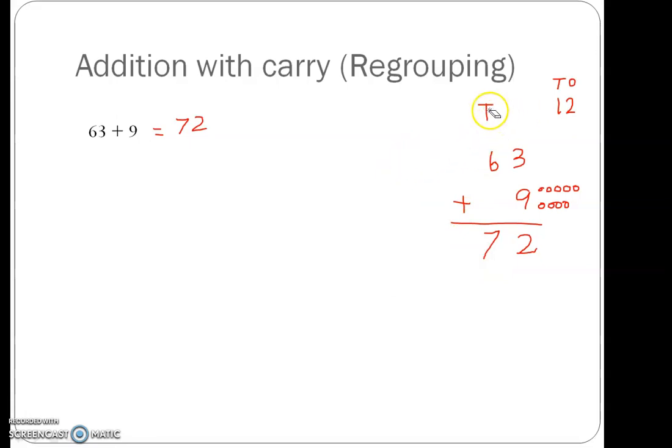Now let us look at another example. 27 plus 6. So first we arrange them in place value chart. 10s and 1s. 27 is 2 tens and 7 ones. Plus 6, 6 is 6 ones. Now we add the digits in the ones place.